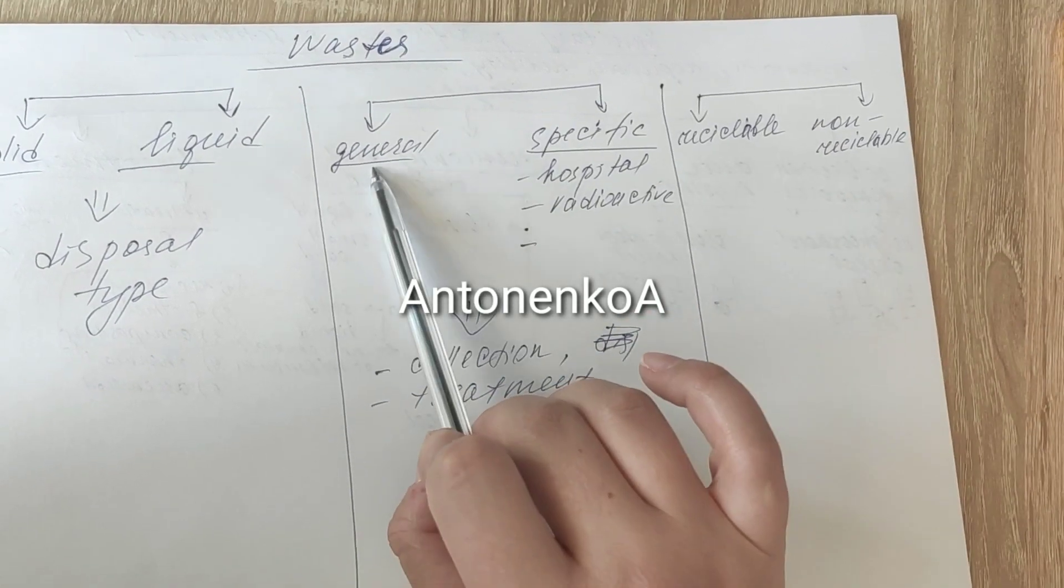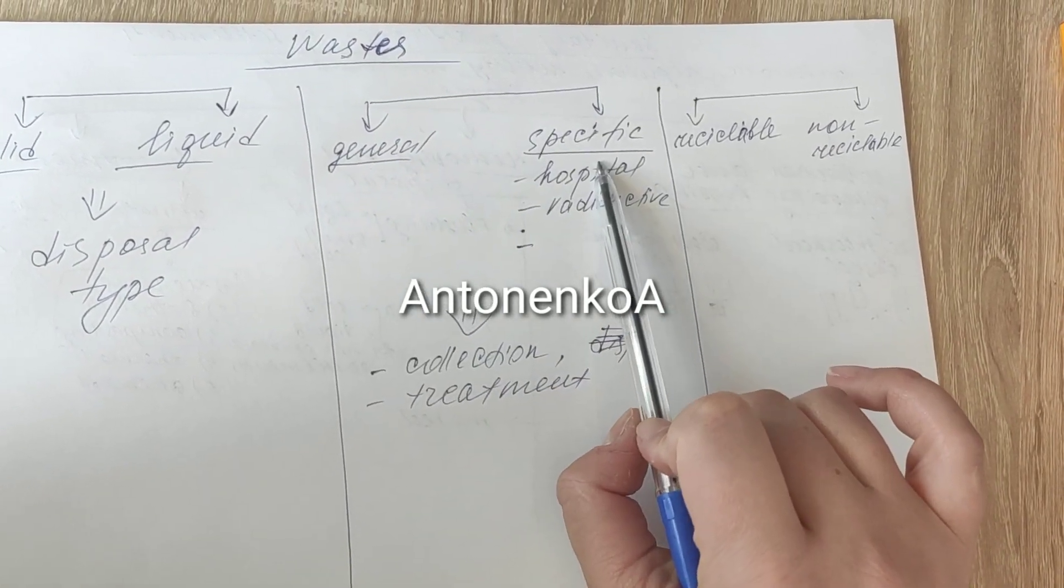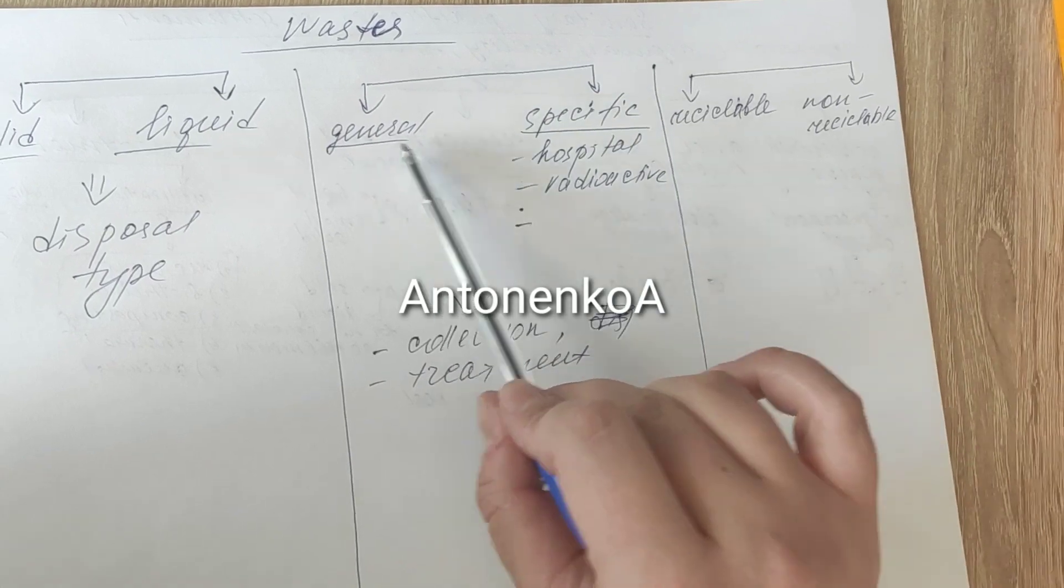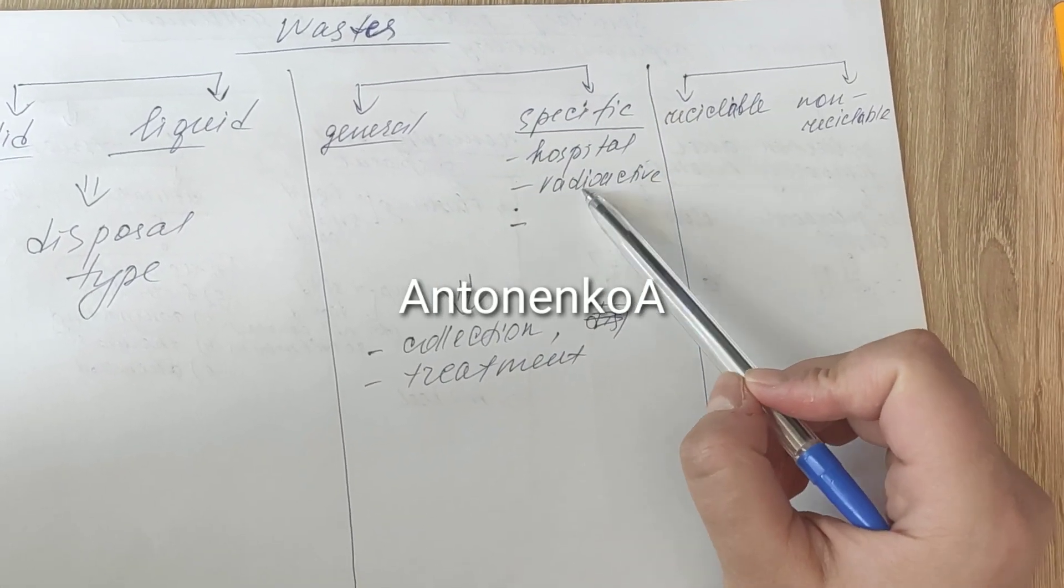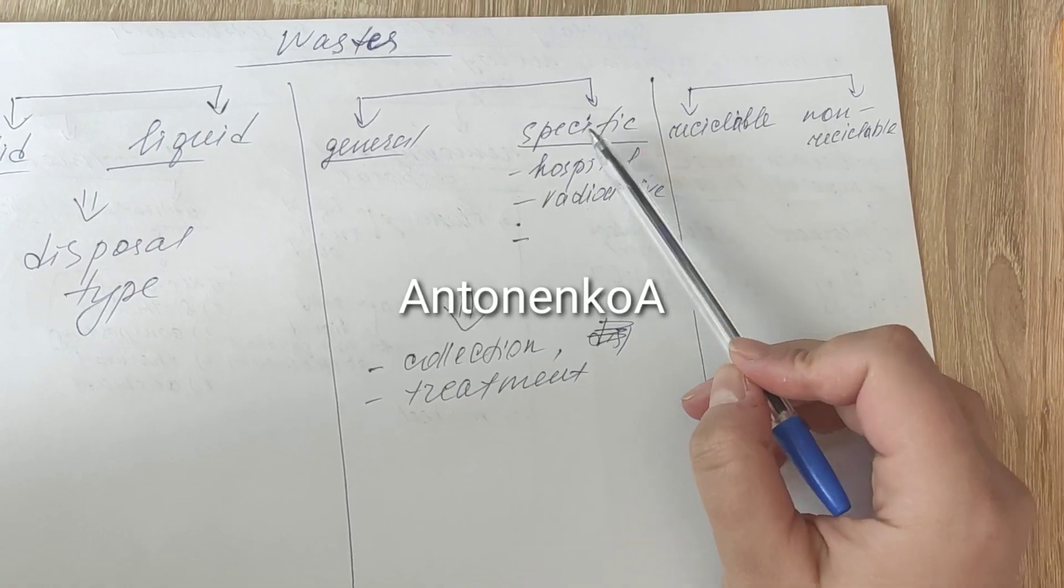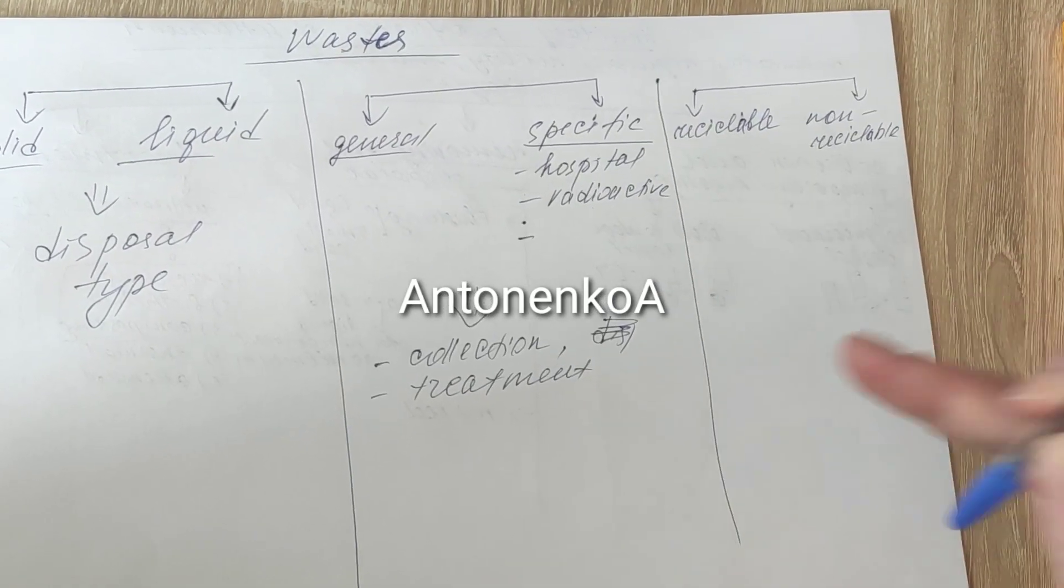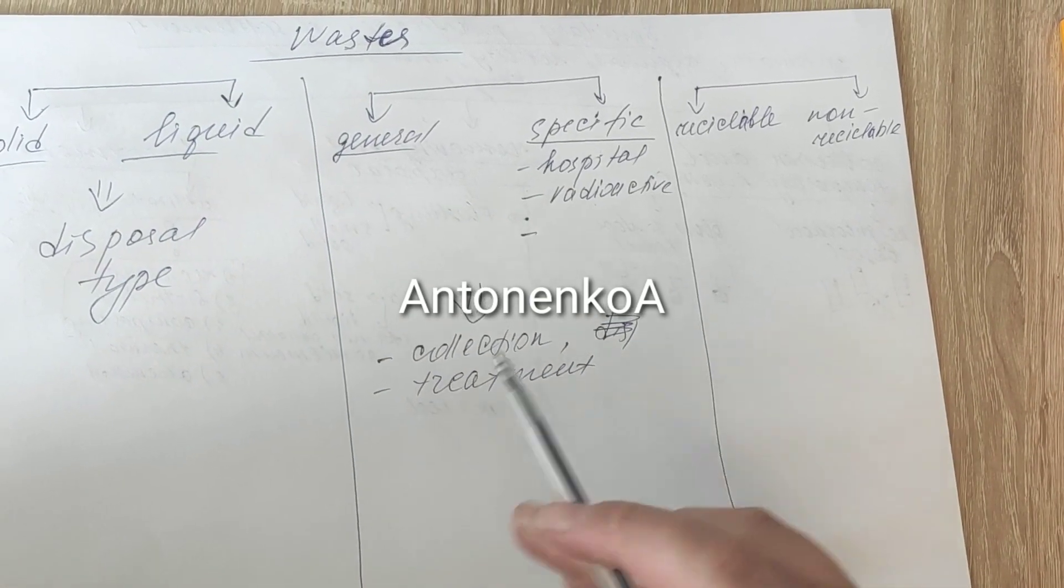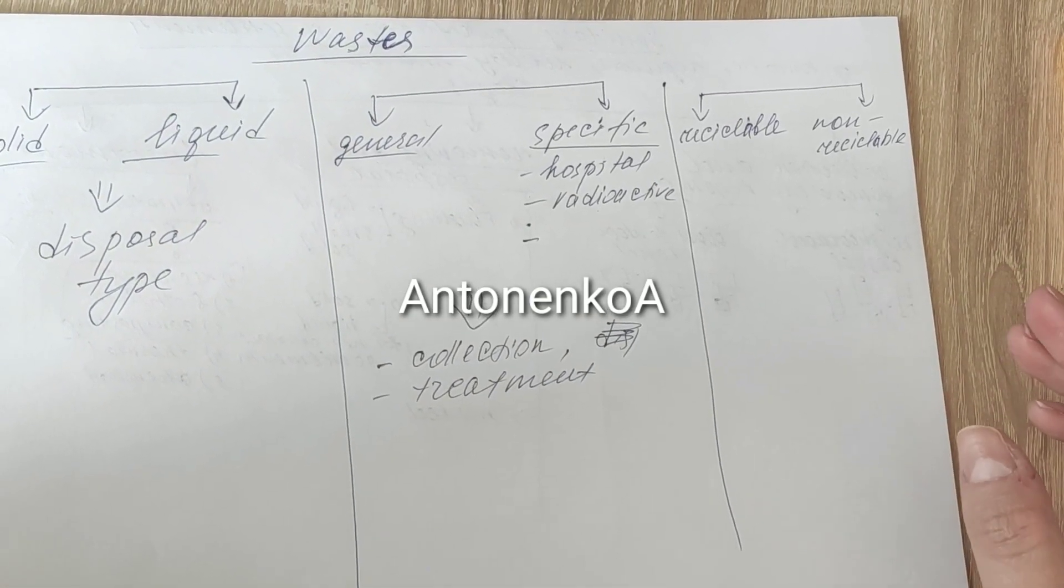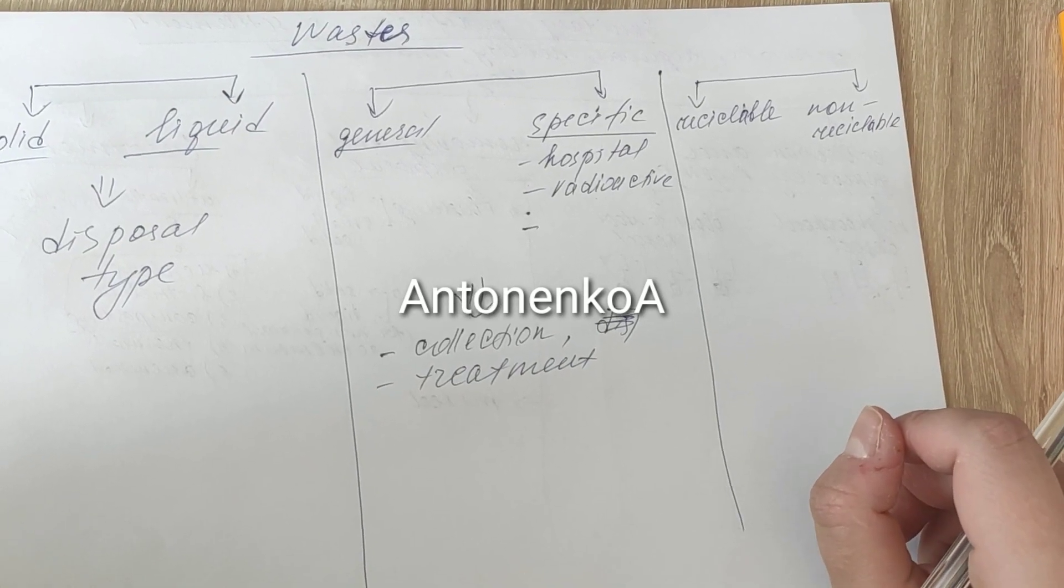Next classification we divide by general and specific. This classification we have just to mark which one is specific, for example, hospital waste, radioactive waste, because this waste has higher danger comparing with general types. That's why we have special ways of collection, storage and special ways of treatment.